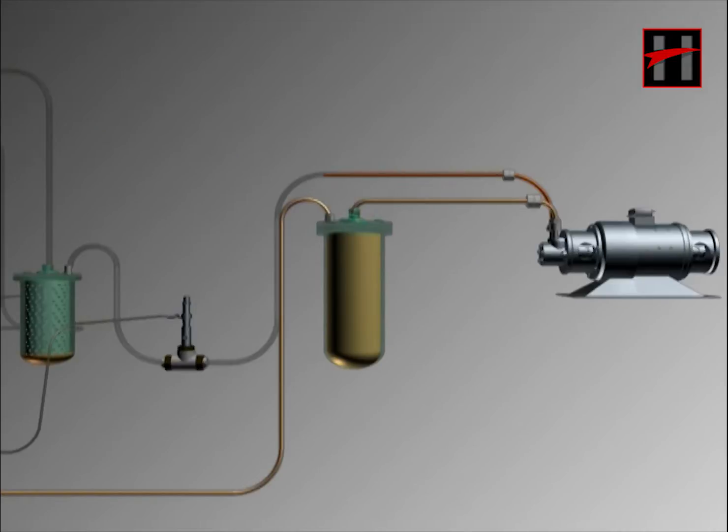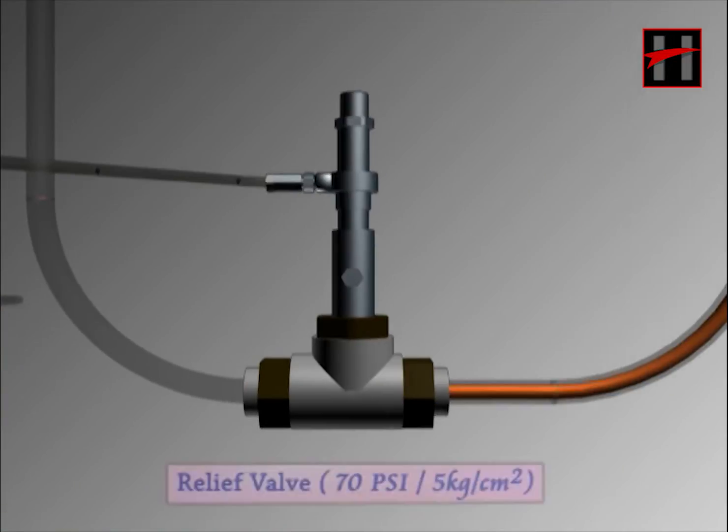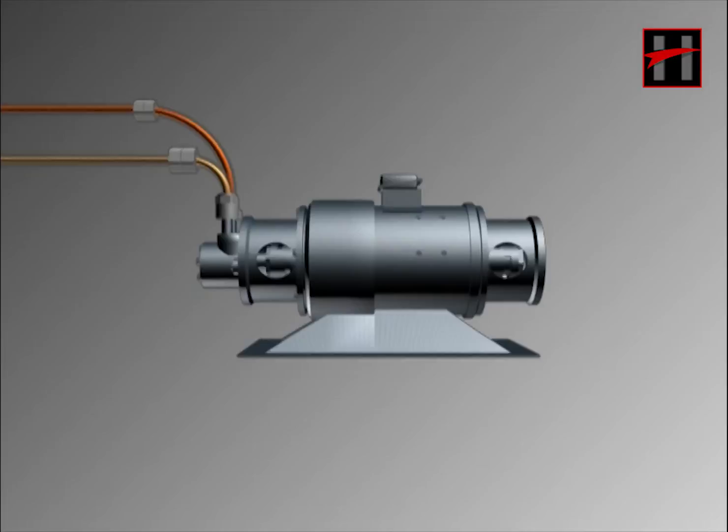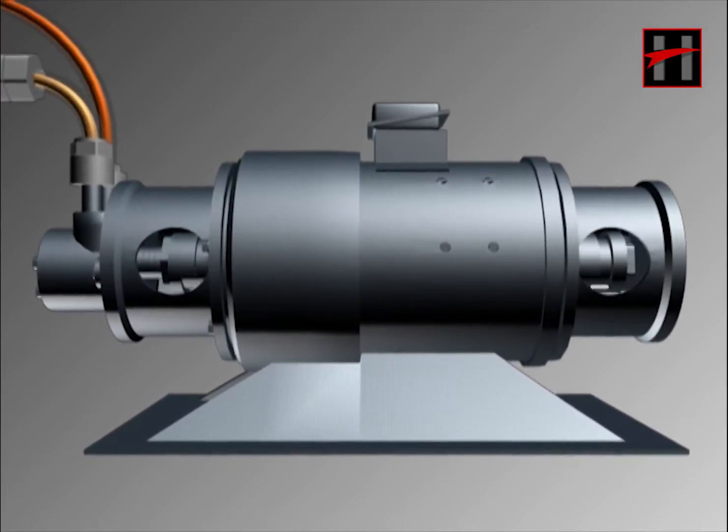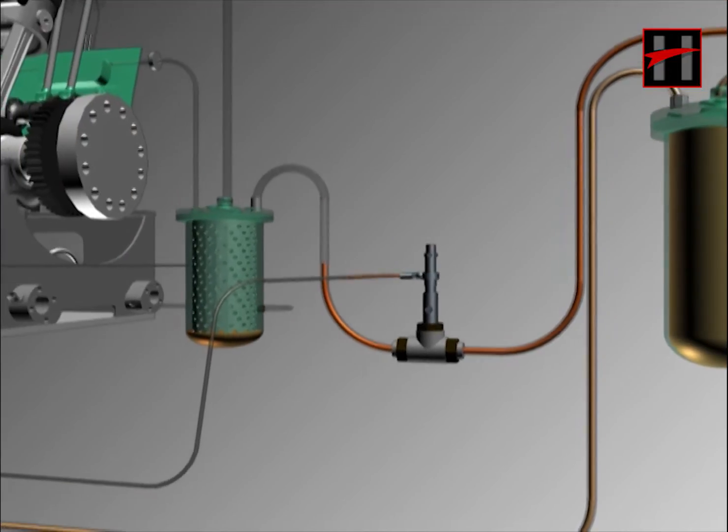After passing through the fuel booster pump, the fuel oil reaches the relief valve. The relief valve is set at 70 psi and keeps the fuel pressure at 70 psi so that the fuel booster motor does not get pressurized.